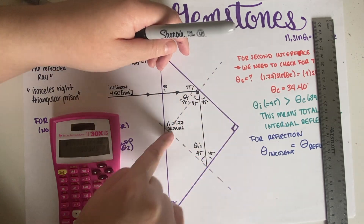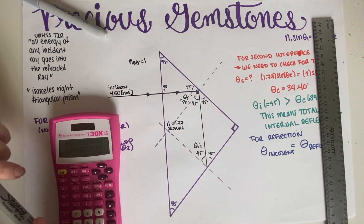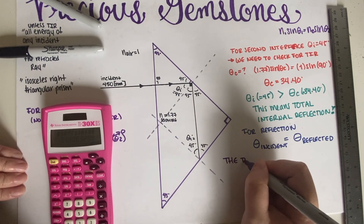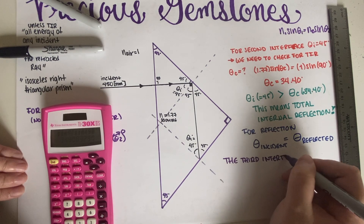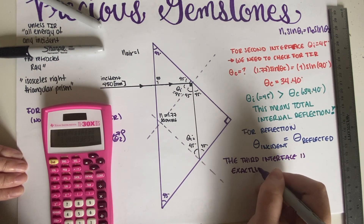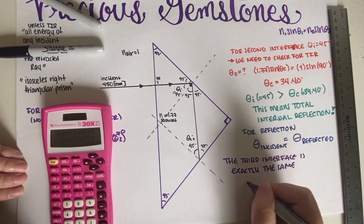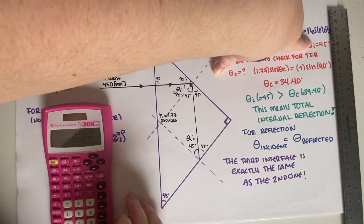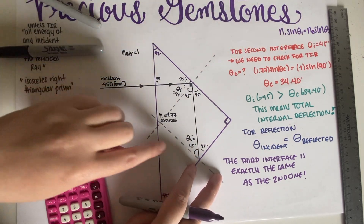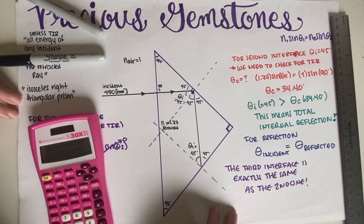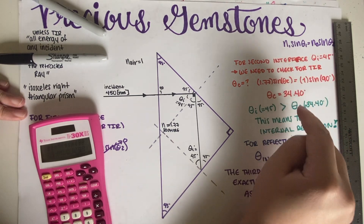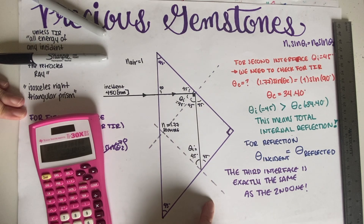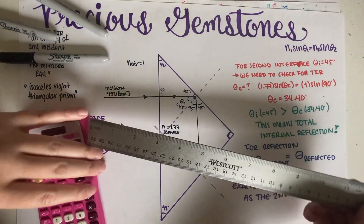The third interface is exactly the same situation as the second one. The same indices of refraction apply (1.77 to 1), giving the same critical angle of 34.40 degrees. The incident angle is still 45 degrees, which is greater than the critical angle, so total internal reflection occurs again. Everything bounces back — nothing exits through the third interface either.